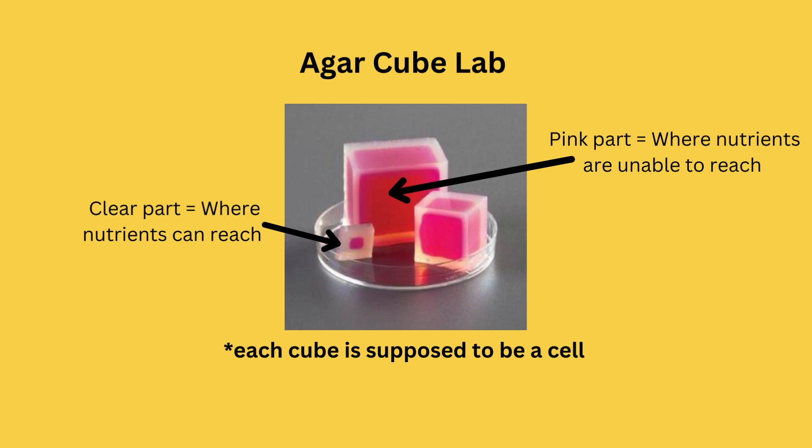As you can see, in the small cube, it is much easier for nutrients to reach most of the cell due to a high surface area to volume ratio. However, in the large cube, nutrients have a very hard time reaching most areas within the cube due to a low surface area to volume ratio.